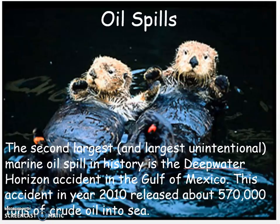The next way we impact ocean ecosystems — one that's usually unintentional — is oil spills. The second largest unintentional marine oil spill in history is the Deepwater Horizon accident in the Gulf of Mexico. This accident occurred in 2010, where the Deepwater Horizon vessel released about 570,000 tons of crude oil into the sea.